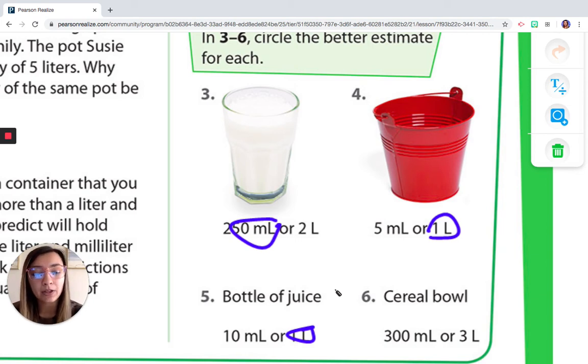And our last example says a cereal bowl. So this says 300 milliliters or three liters. So I'm going to think of a bottle of soda or a bottle of juice is one liter. And I have a small cereal bowl. So again, I'm going to think that the smaller measure of liquid is probably going to work best here. So for my cereal bowl, I'm going to choose 300 milliliters because the bowl itself is a smaller container.